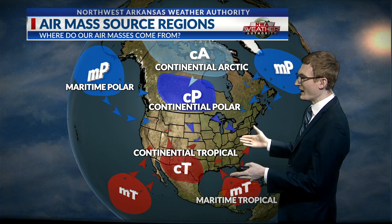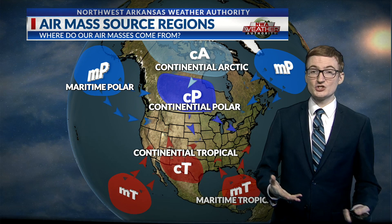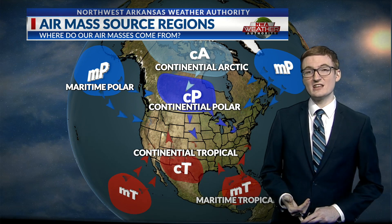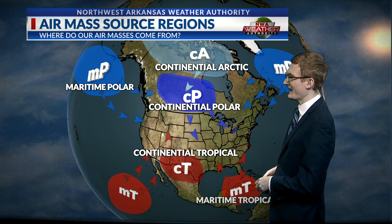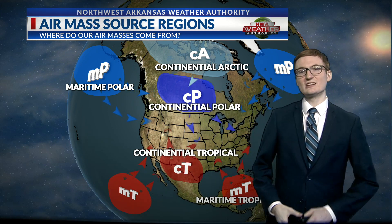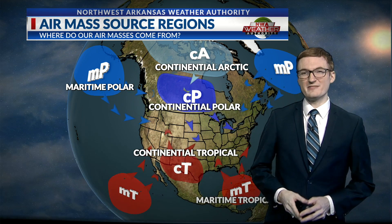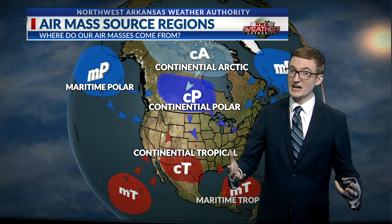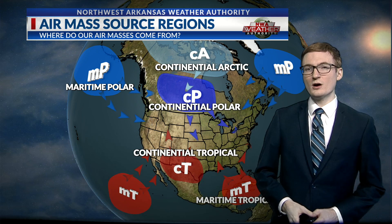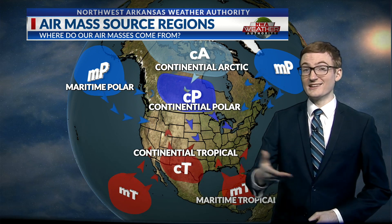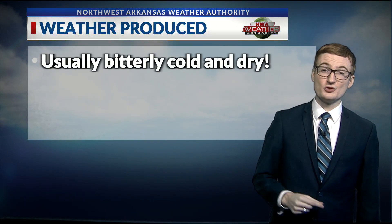First, we're going to talk about where it comes from: the high Arctic, no surprise there. It usually comes from the Yukon and Northwest Territories provinces of Canada, and eastern and northern Alaska also like to develop these types of air masses. Less sunshine during the winter months allows it to get colder. We're also looking at a lot of snowpack in that area, and that helps to develop those cold air masses.